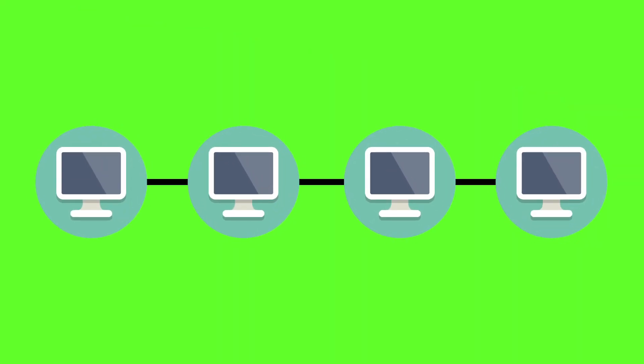Once a record has been added to this chain, it is very difficult to change it. To ensure that all copies of the database are the same, the network will make a constant check to it.